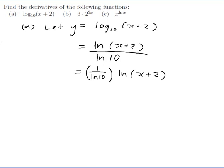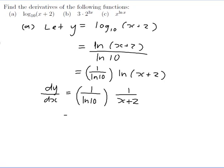When I differentiate, the 1 over ln 10 will stay there because it's just a constant multiplied on, and I'll just have to multiply by the derivative of ln(x + 2). I need to use the chain rule there. The chain rule tells me that if that was an x, I'd do 1 on x, but it's not x, so I put 1 on (x + 2), and multiply by the derivative of what's inside, which is just 1. So the answer is 1 over ln 10 times (x + 2).